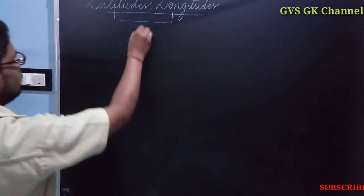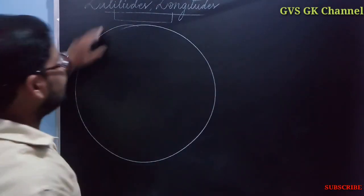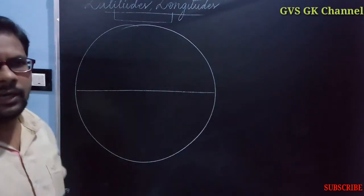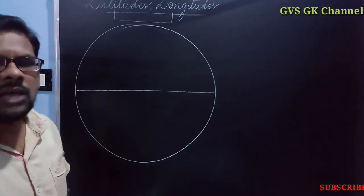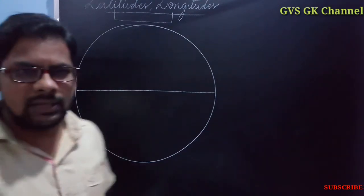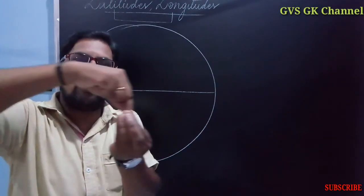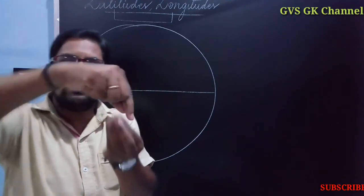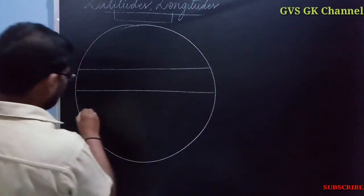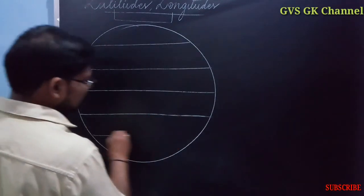Now we are going to discuss latitudes on the globe. Generally, the horizontal lines on the globe are called latitudes. Actually, latitudes are circles — they are circles because they go around the globe. There are seven important latitudes on the globe.